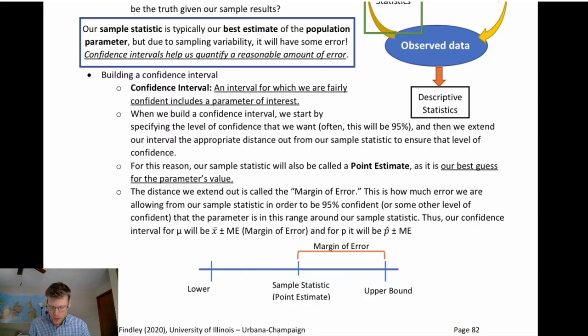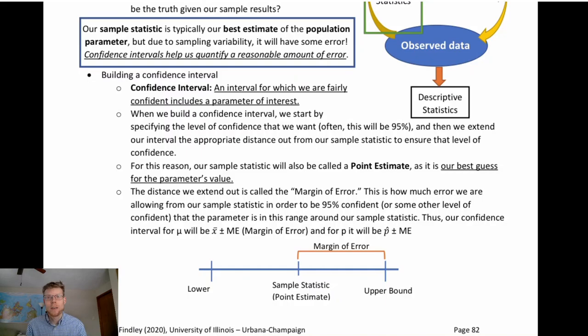This distance that we extend out is called the margin of error for our confidence interval — how much error we're allowing in our singular estimate. If the true parameter is farther away than that, we're going to miss it with our interval. We extend our interval a certain amount such that we are x percent confident that we are including the population parameter.